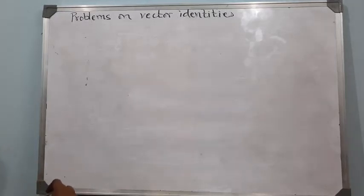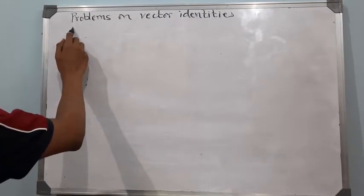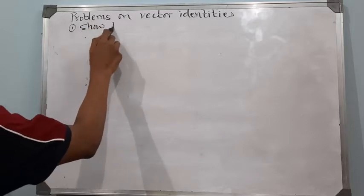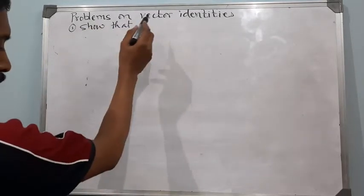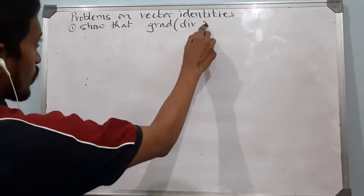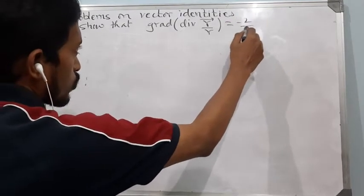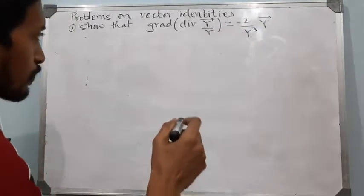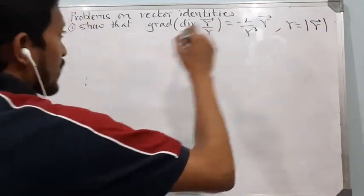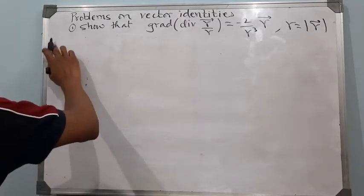Hello students. In this video I'll be discussing some problems on vector identities. To begin with, let us consider: show that gradient of divergence of vector r/r is equal to minus 2 by r³ into vector r, where r is the magnitude of the position vector r.